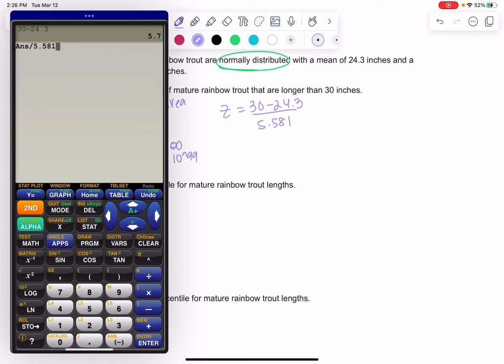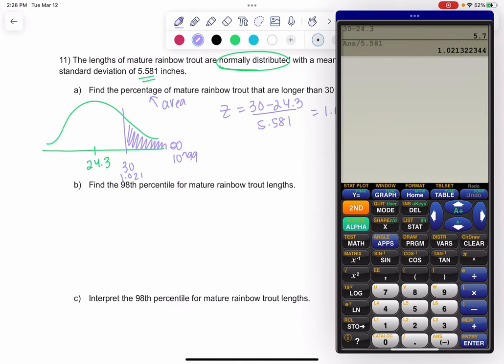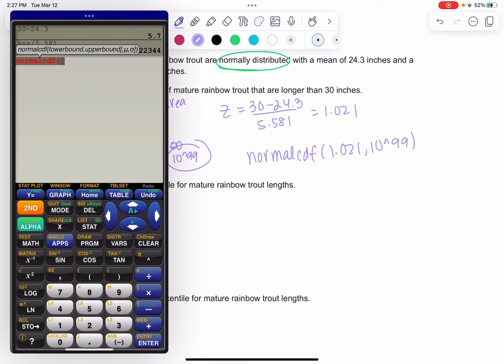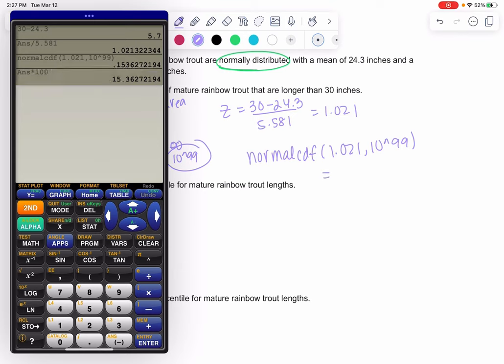We get a z-score of 1.021. Then we'll do normal CDF lower to upper. Upper would be infinity or 10 to the 99. That'll tell us the percentage in decimal form. Second distribution, normal CDF. We've been using this a lot. So 0.1536, if you want to convert that to a percent, you just move it 2 to the right and you get 15.3%. I converted to a percent because it asked for a percentage this time. So 15.36% are longer than 30 inches.